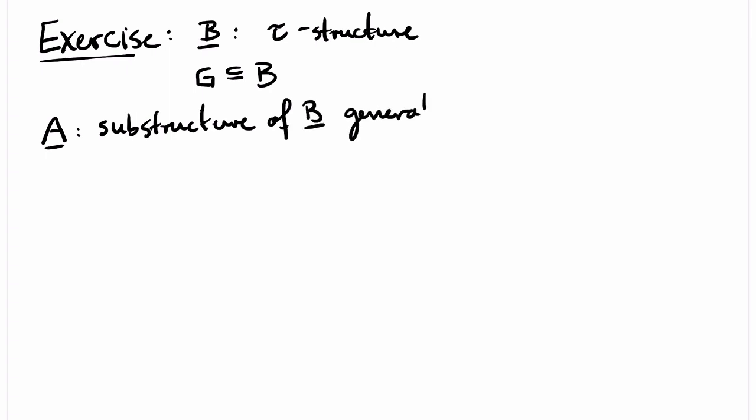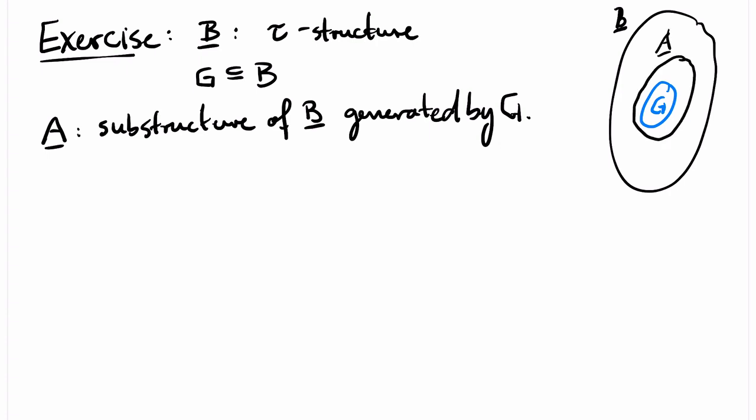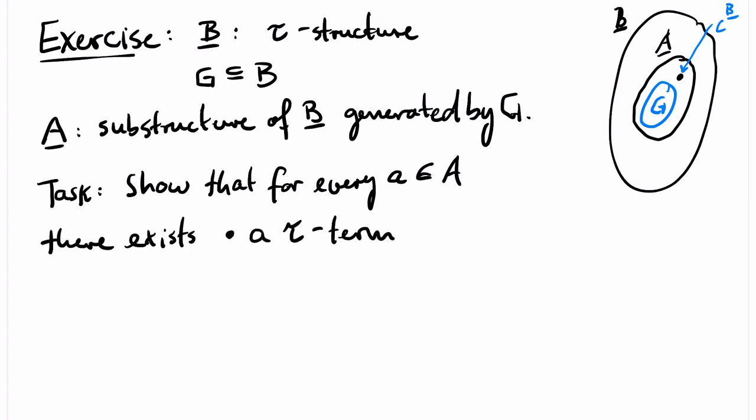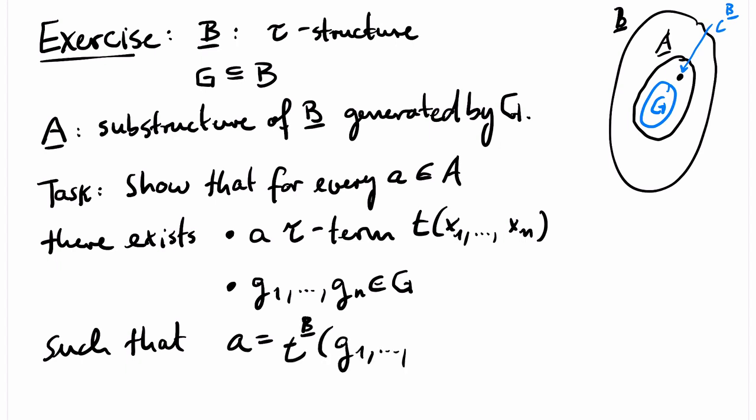Here comes an important exercise. Let B be a tau structure and let G be a subset of B. I already said in the video about structures that there is a smallest substructure of A that contains G. It is called the substructure of B generated by G. This substructure must for example contain for every constant symbol C in the signature tau the element C superscript B. The task is to show that for every element a of A there exists a tau term T with variables x1 up to xn for some n and elements G1 up to Gn from G such that our element A equals T superscript B applied to G1 up to Gn. This is a very useful fact.